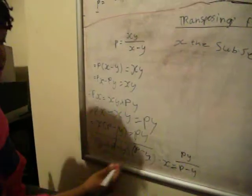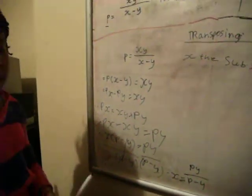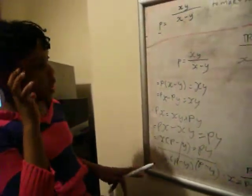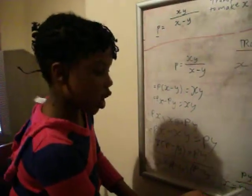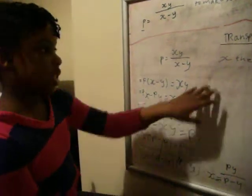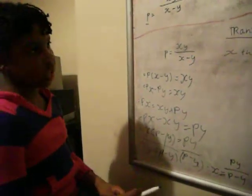You don't put brackets because you can't break that down any further or do anything else any further. So our first answer, x equals py over p minus y. That's how you make x the subject on this one.